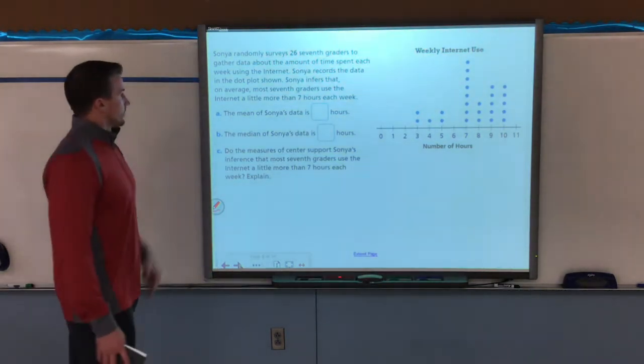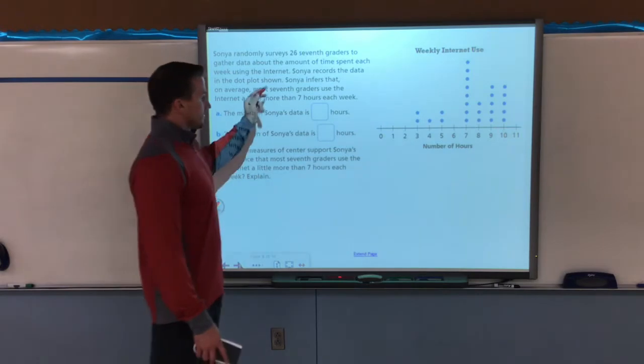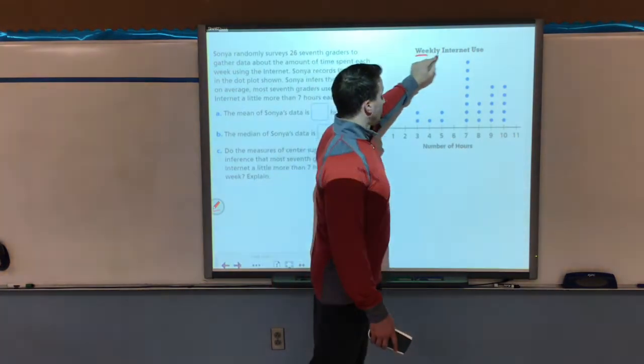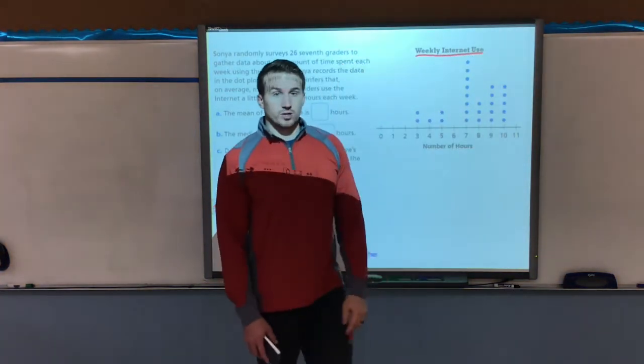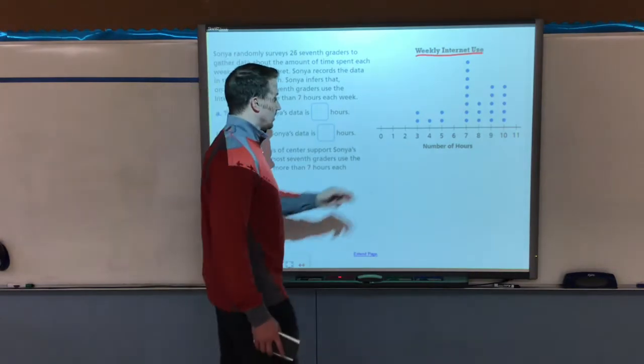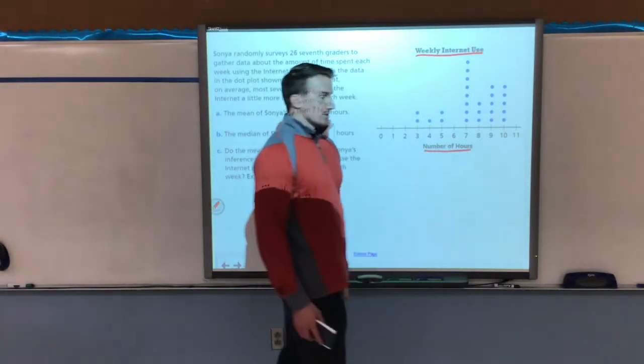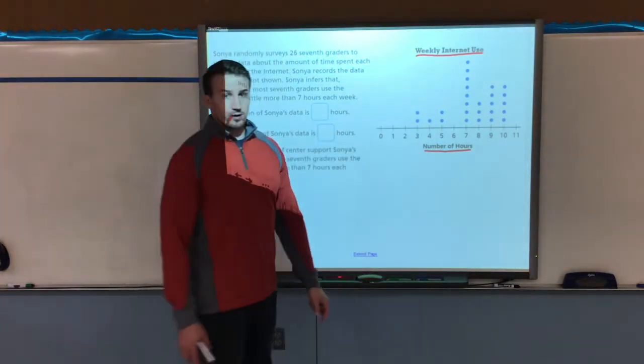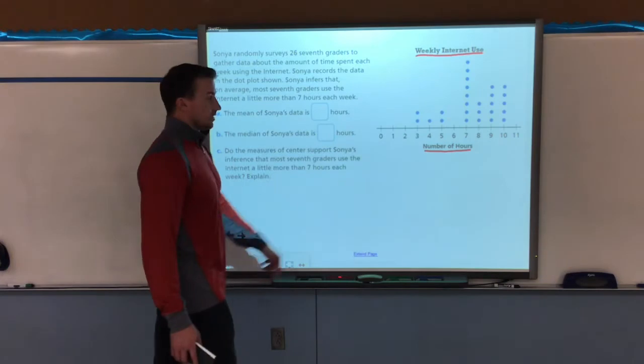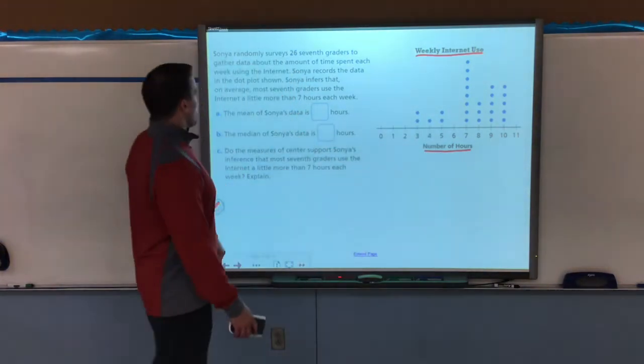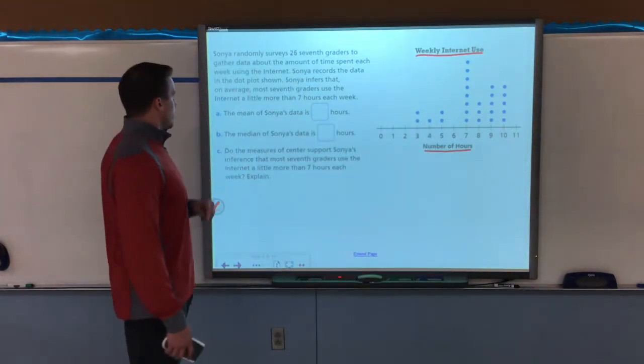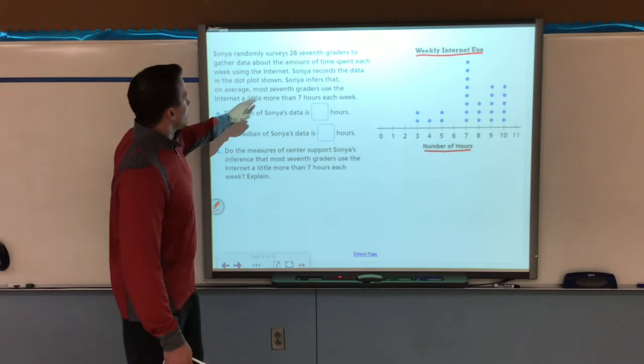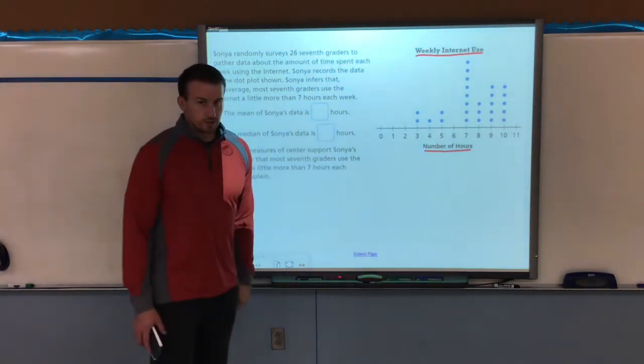Now, this one says that Sonia randomly surveyed 26 7th graders. Here are the 26 dots or x's for my line plot. Title explains what we're talking about. We're talking about weekly internet use. My number line, my axis being labeled represents the number of hours for internet use for students. Each dot is one of the students.